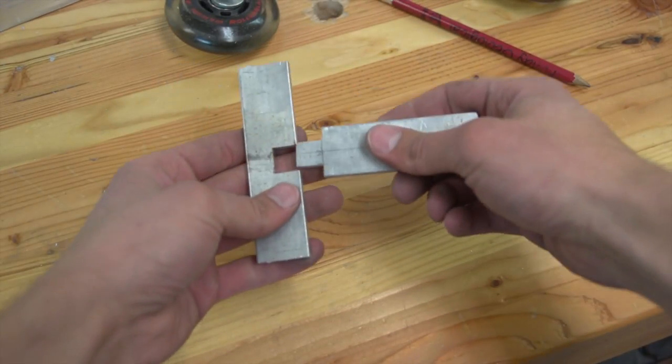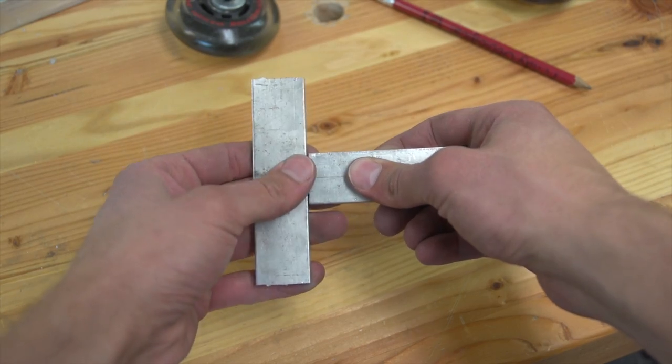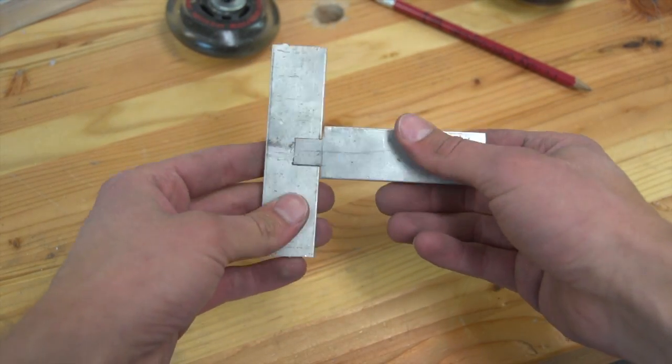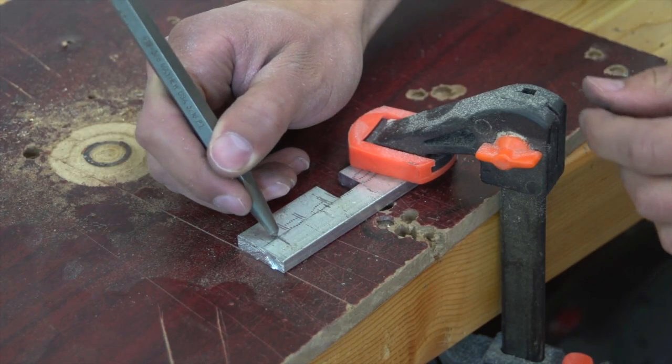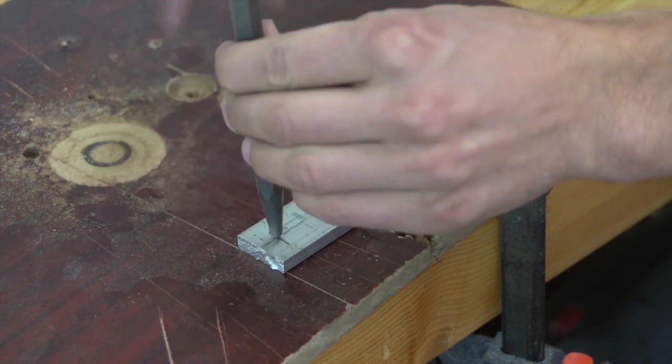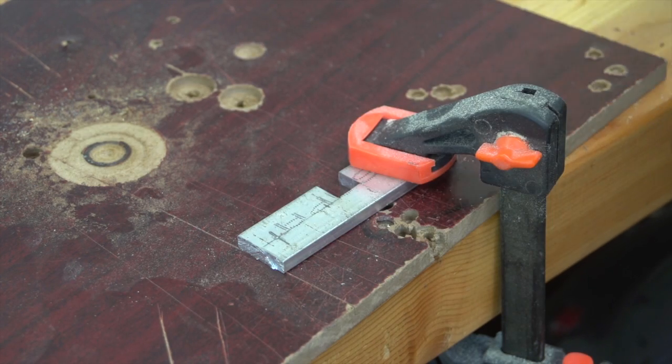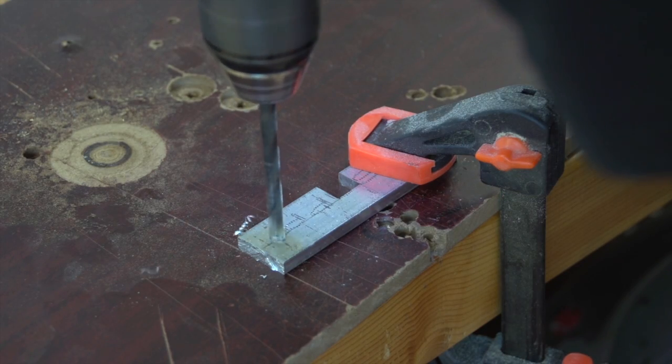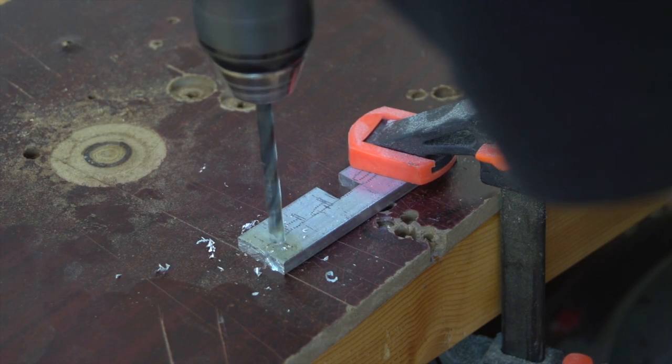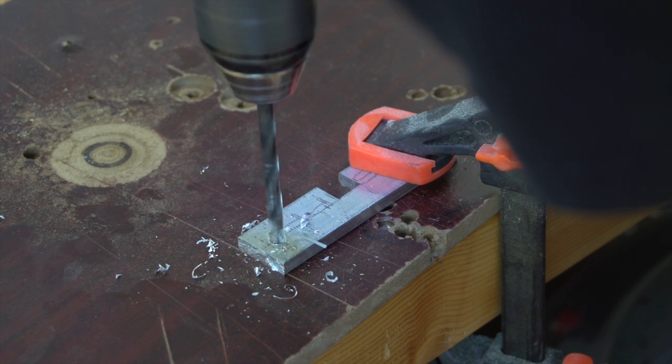Once you've made this cut, check to ensure the pieces fit together well and use a file to make any adjustments necessary. Now go ahead and drill the holes. Remember to always use a punch to mark the center of the hole before you drill. I'm using a quarter of an inch bit, but you might need to use a different size depending on the wheels and hardware you have for this project.